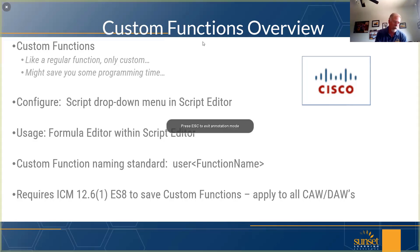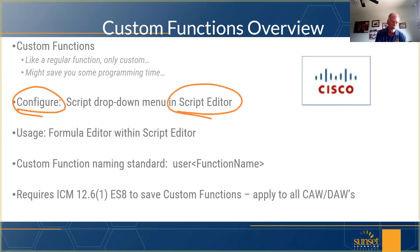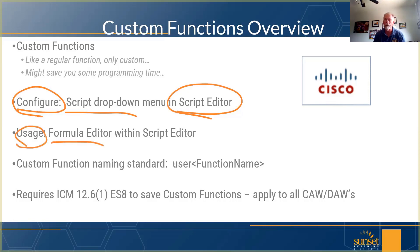Key things configuration-wise: we configure custom functions in Script Editor under the Script drop-down menu item. That's where we go to build and construct our custom functions. We use custom functions within the formula editor of Script Editor itself. When you're building a formula, you've got a variables tab, a functions tab, and a custom functions tab. We'll point out how to use those within Script Editor.